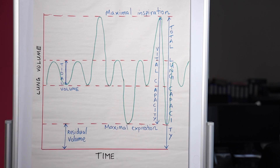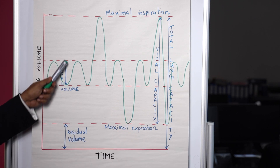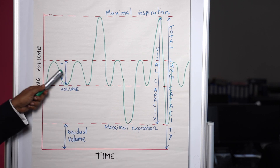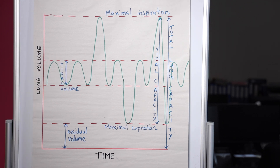Total lung capacity is the vital capacity plus the residual volume. Tidal volume represents our normal breathing. Minute ventilation, or VE, is the total volume of air entering the lungs in a minute — calculated by multiplying tidal volume by respiratory rate.